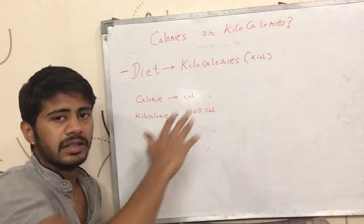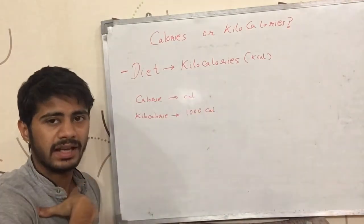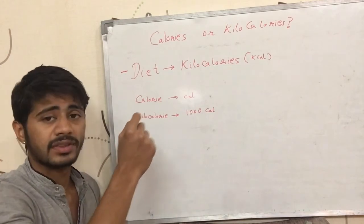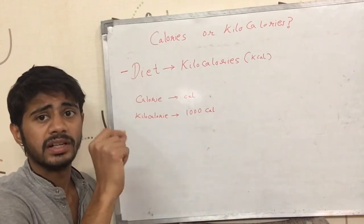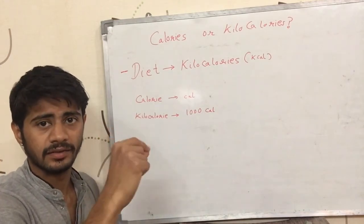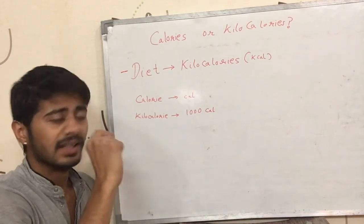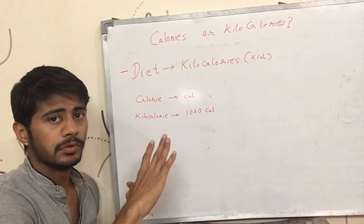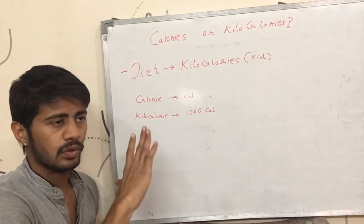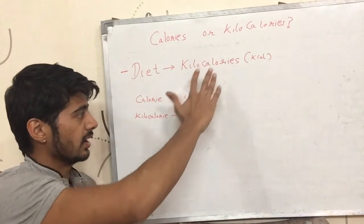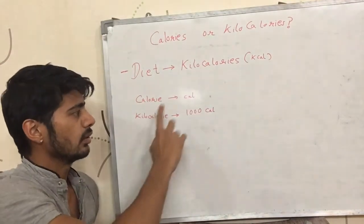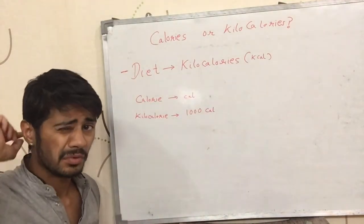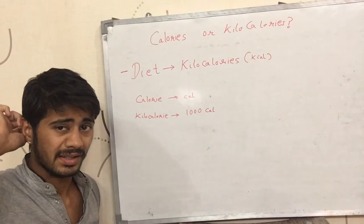Even I have written many times in my videos '1500 calories' — that means I am talking about kilocalories. For human food we are always talking about kilocalories. One kilocalorie has 1000 small calories, but we never talk about those small calories.